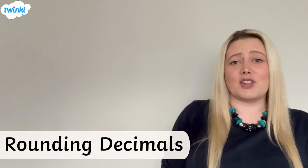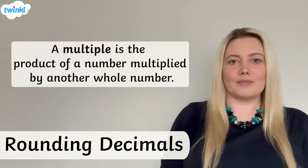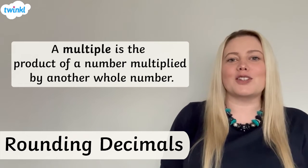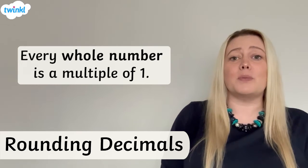When we round a decimal to the nearest whole number, we are rounding it to the nearest multiple of 1. Remember, a multiple is the product of a number multiplied by another whole number. Every whole number is a multiple of 1.